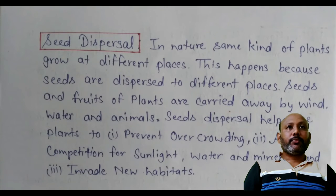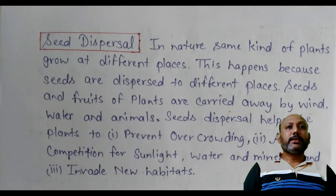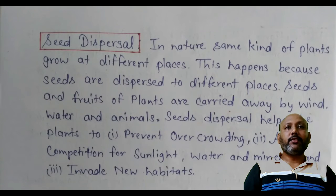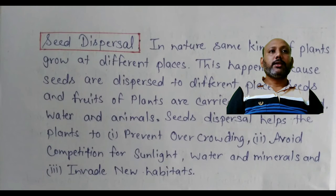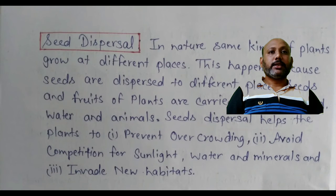In nature, the same kind of plants grow in different places. This happens because seeds are dispersed to different places. Seeds and fruits of the plant are carried away by wind, water and animals. Seed dispersal helps the plant to prevent overcrowding, avoid competition for sunlight, water and minerals, and invade new habitats.